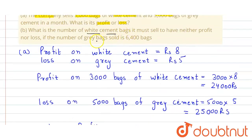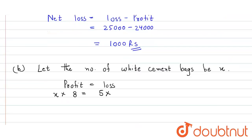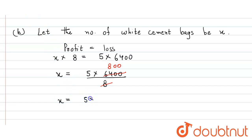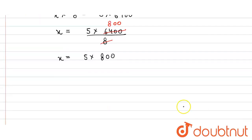The number of grey bags sold is 6400, so loss equals 5 × 6400. Setting profit equal to loss: x × 8 = 5 × 6400. Therefore x = (5 × 6400) ÷ 8 = 5 × 800 = 4000. So the value of x is 4000 bags of white cement, and that's our answer.